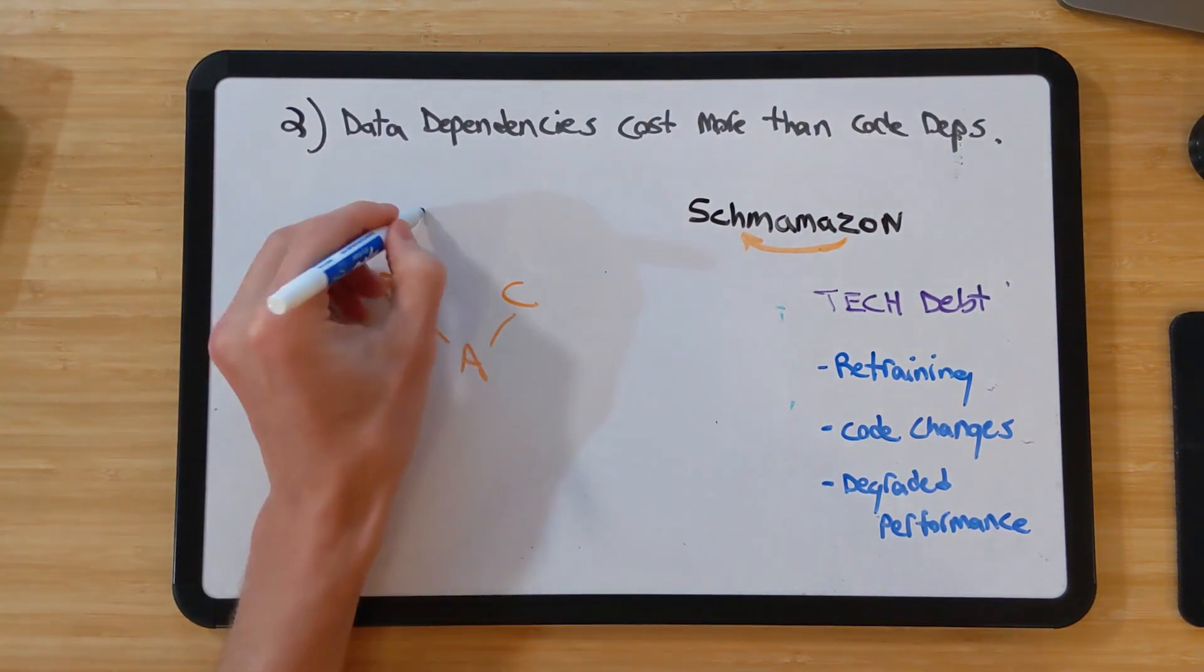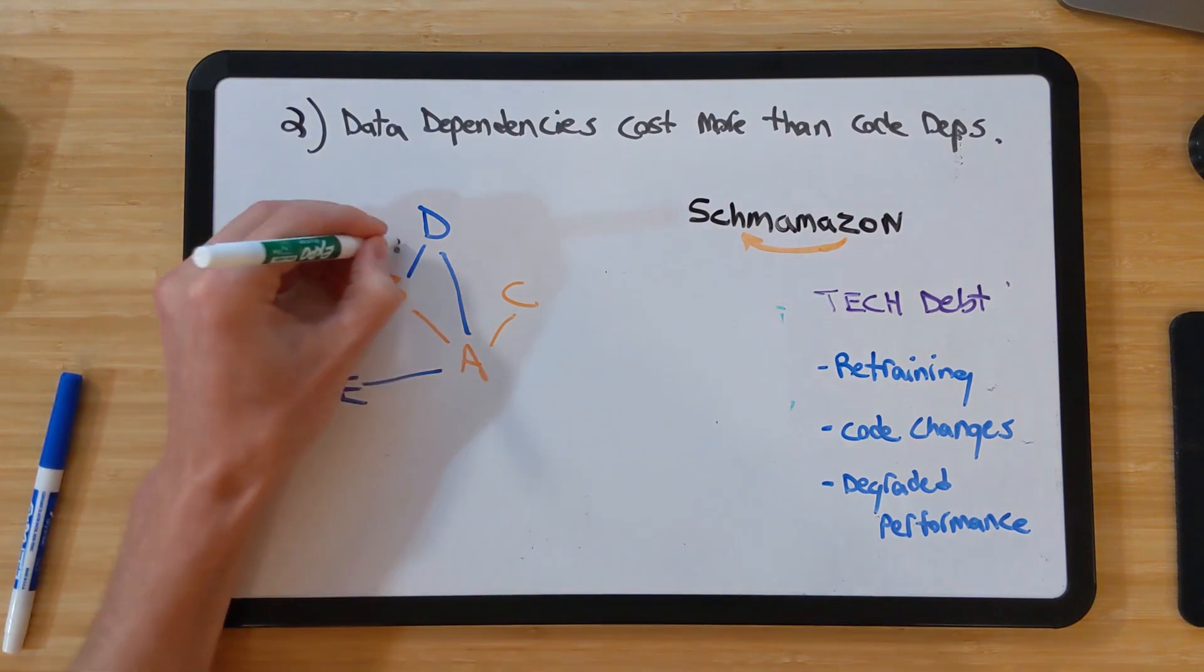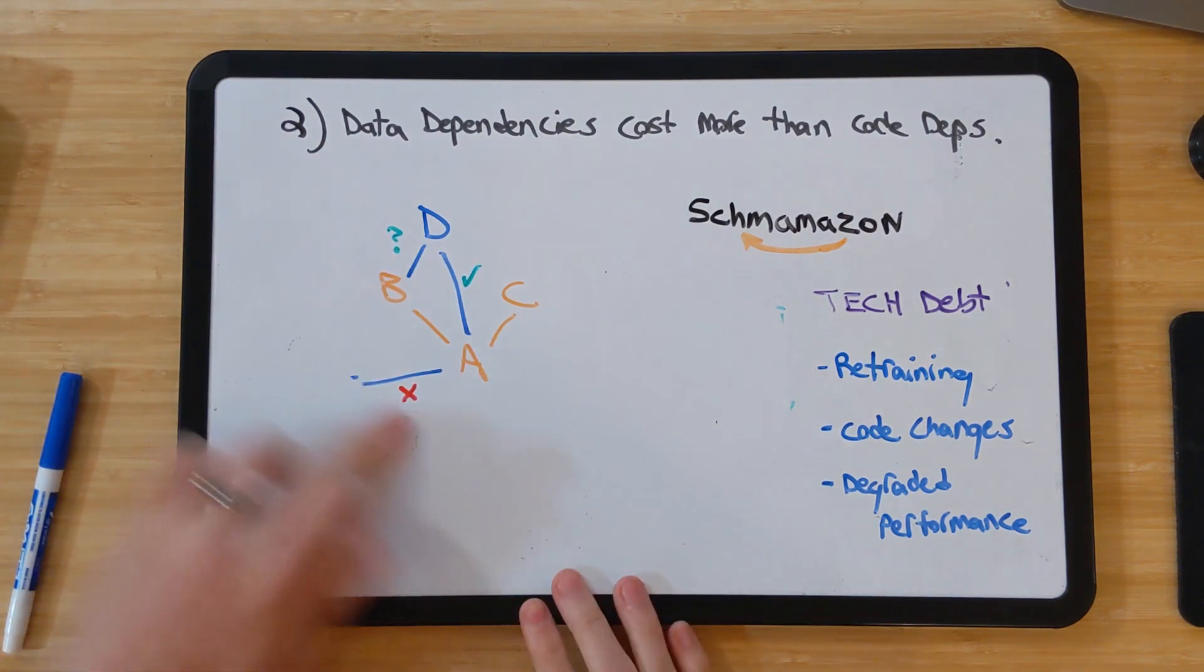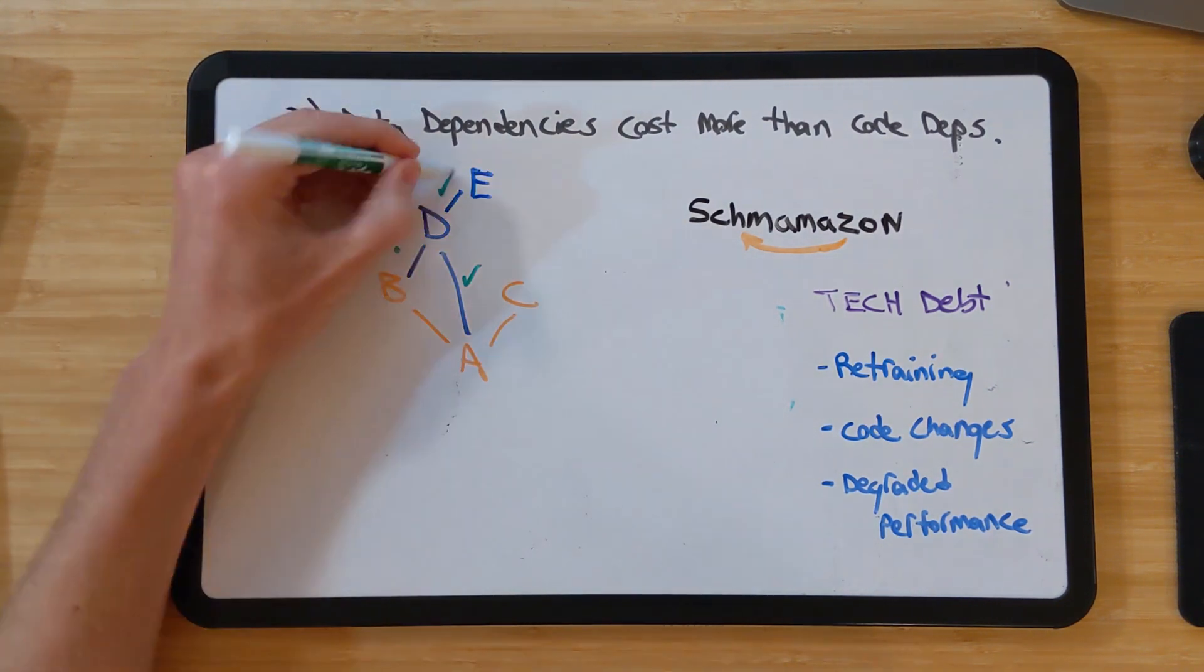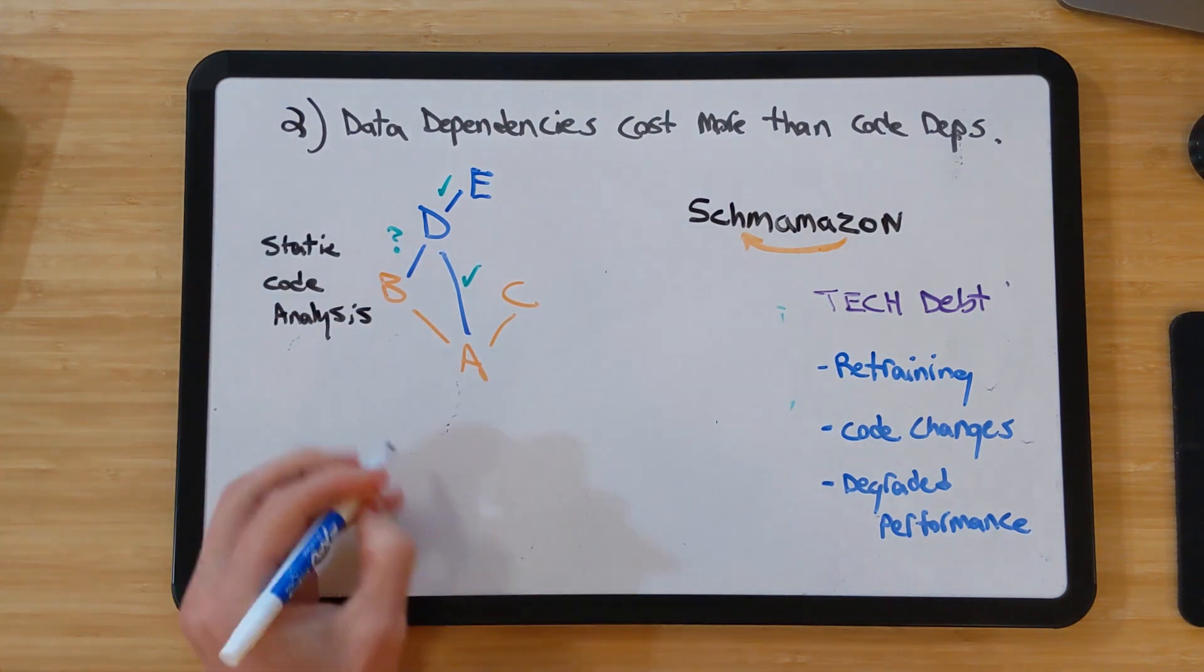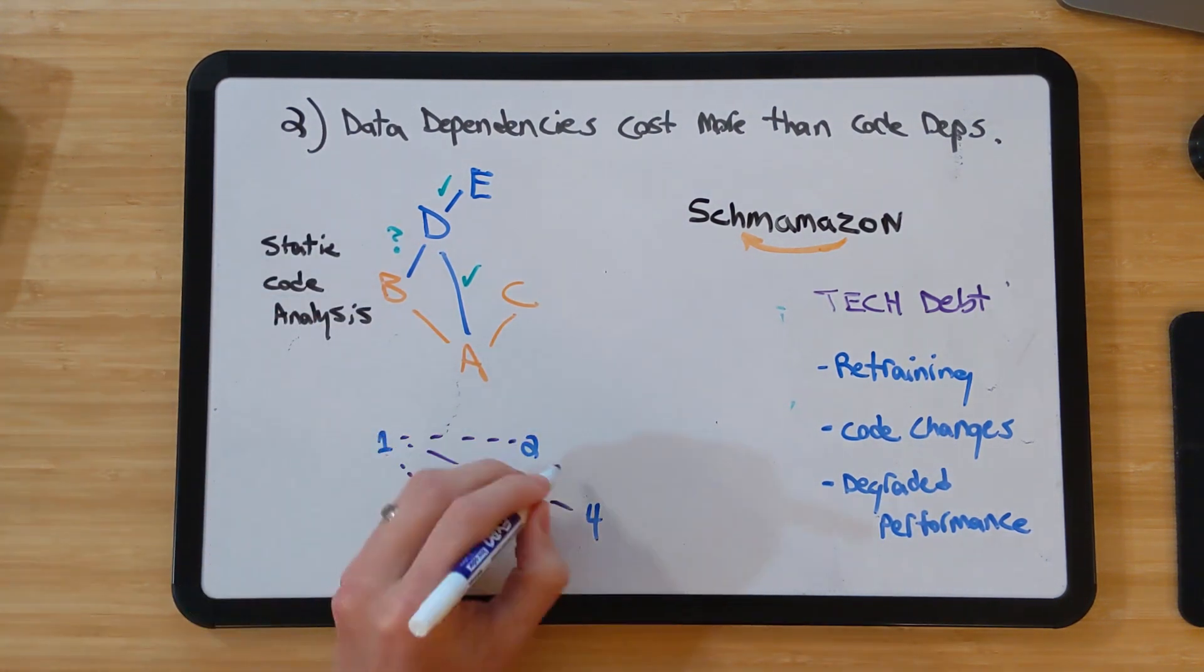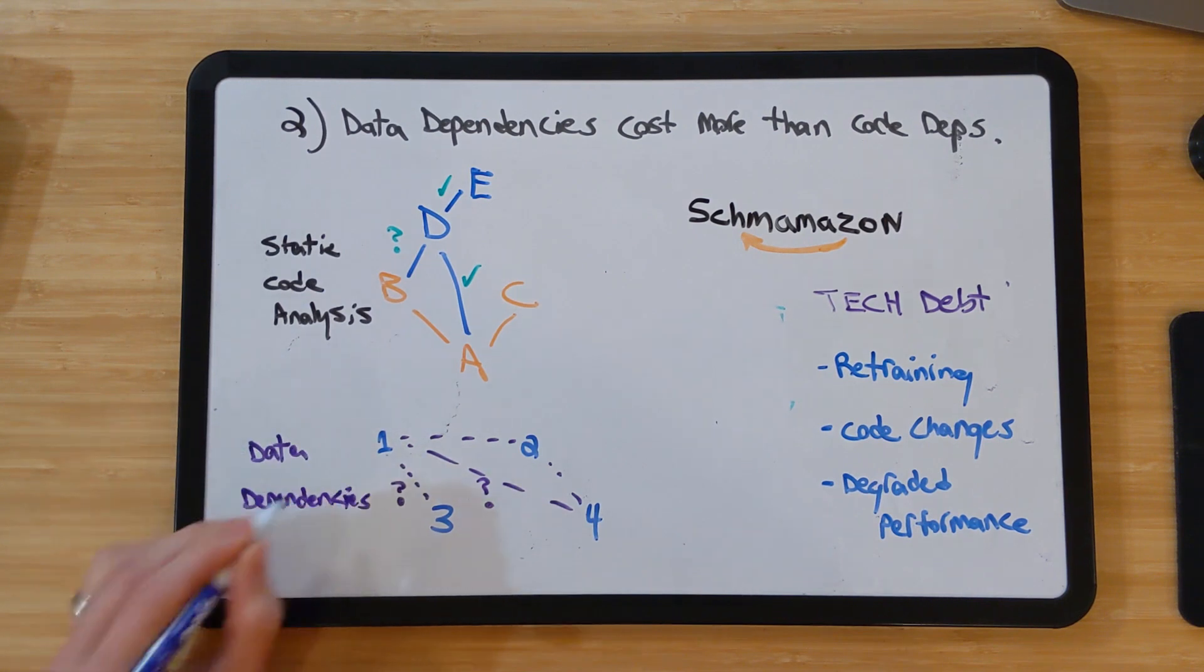In traditional software, there are static code analysis tools that are built specifically to examine dependency graphs, and those can help to identify and triage related issues. This type of tooling is much less widespread for data dependencies, as described here.